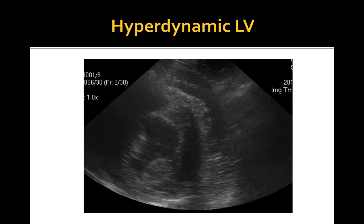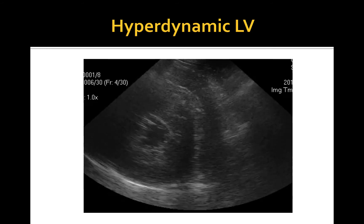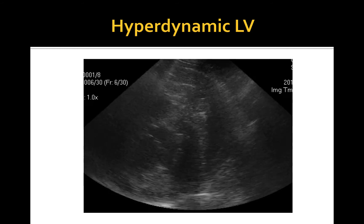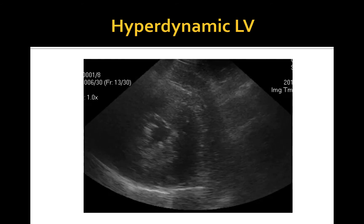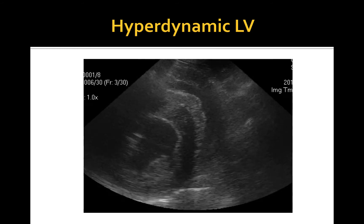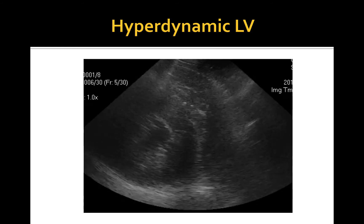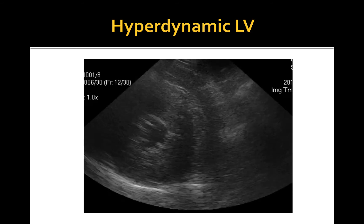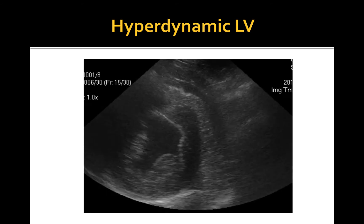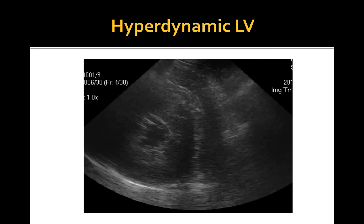This is an example of a hyperdynamic left ventricle. Here you can appreciate a small LV lumen during systole and vigorous hyperkinetic contractions obliterating the ventricle in systole. You can also appreciate the so-called kissing of the papillary muscles, which come in contact during LV contraction. Hyperdynamic LV is traditionally associated with hypovolemic shock; however, its presence doesn't always equal volume depletion in your patient.